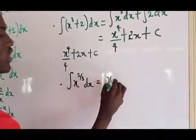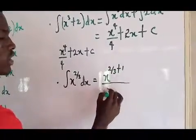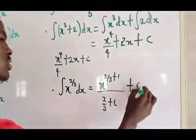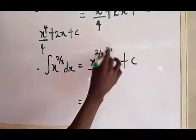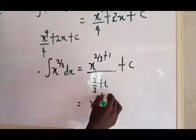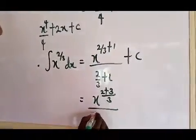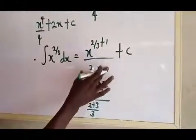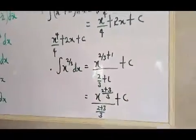So the third example gives x to the power (2/3 + 1) over (2/3 + 1) plus c. For the exponent, we compute 2/3 + 1: that is 2 over 3 plus 3 over 3, giving us 5 over 3. The denominator is also 5 over 3, plus c.